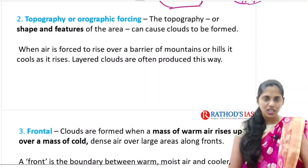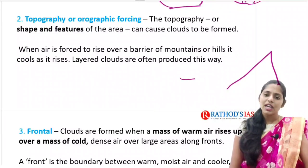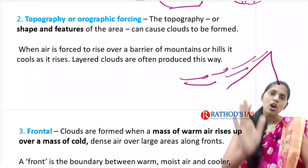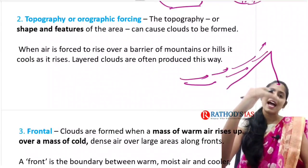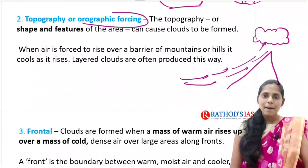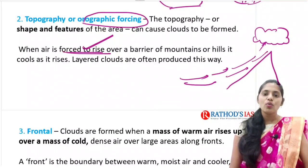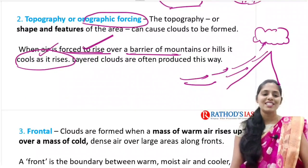Next is topographic or orographic forcing. The topography or shape and features of an area can also cause clouds to form. For example, when air moving in one direction carries moisture and rises along the slope of a mountain, it reaches higher altitude where, according to the normal lapse rate, temperature decreases. Because of this, condensation occurs and clouds form. This orographic forcing is mainly seen when air is forced to rise over the barrier of a mountain or hills, cools, and often leads to cloud formation.